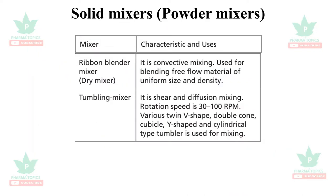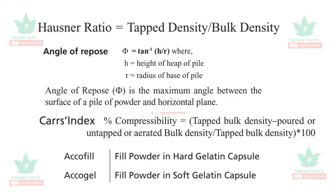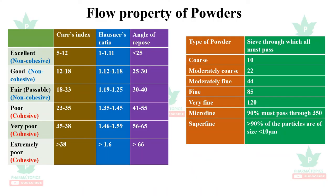Solid mixers — two types are available: a dry ribbon blender mixer and a tumbling mixer. Hausner ratio equals tap density divided by bulk density. Angle of repose is tan inverse of h/r, where h is the height of the heap and r is the radius of the base of the pile. Carr's index indicates the percentage compressibility. Aquafill is a machine which fills powder into hard gelatin capsules; Aquagel fills powders into soft gelatin capsules.